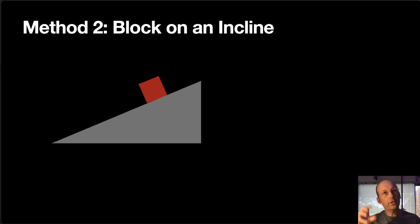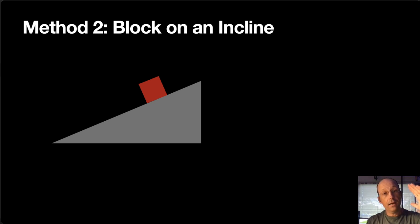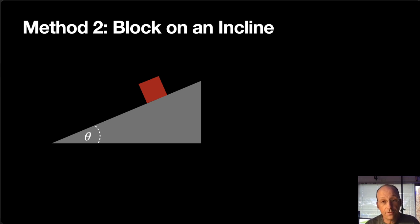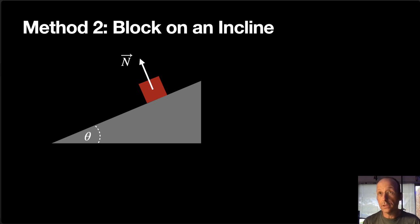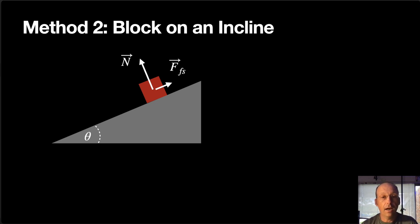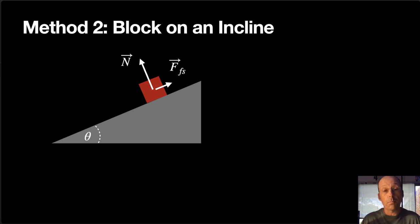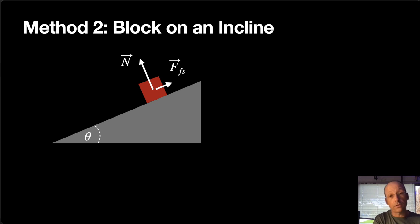Method two: put a block on a tilted plane and increase the angle θ until it slides. Right at the point where it's about to slide, all forces add up to zero. The forces are: a normal force perpendicular to the surface, a static friction force pushing up the plane, and gravity straight down. Importantly, the normal force is not equal to mg here since the plane is tilted. I pick an x-axis along the plane and a y-axis perpendicular.